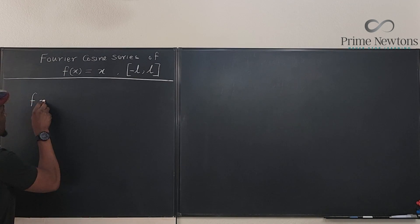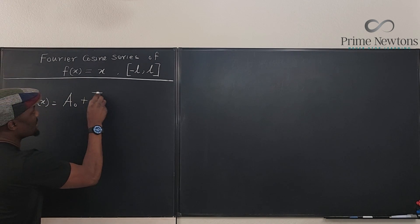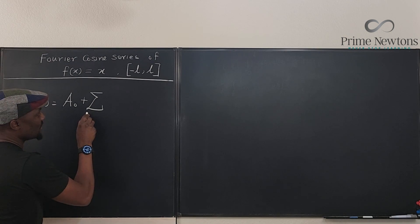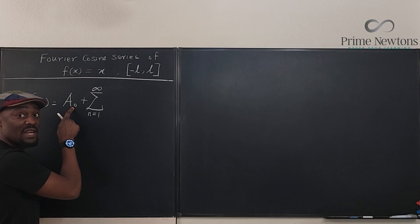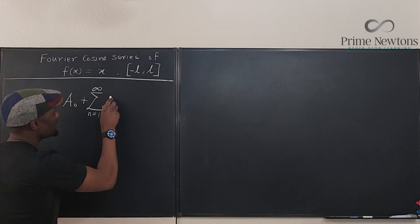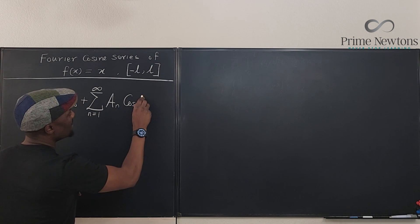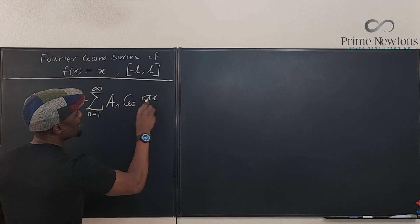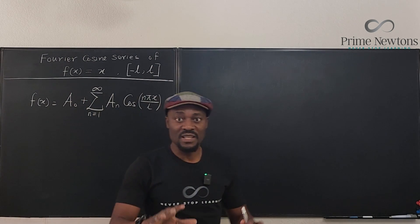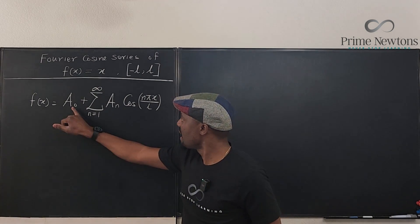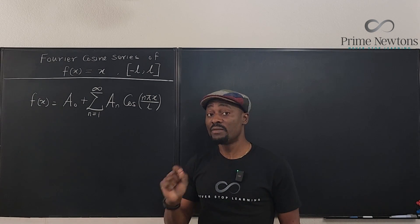We say that f(x) is equal to the initial coefficient plus the sum of all the other terms, which is starting from one to infinity. We're not starting from zero anymore because we obtained this separately. So this is going to be a_n multiplied by the cosine of nπx/L. This is all you need to know. The task is always to find a_0 and a_n. You have to have memorized that it's what you have to do for cosine.